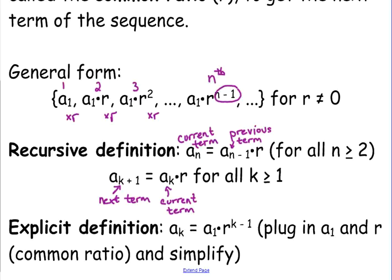Now, the explicit definition is what is more helpful to us. A sub K is equal to the first term times the common ratio to the K minus 1. And just like yesterday, we're going to plug in the first term. We're going to plug in the common ratio. And there's not usually as much simplifying that can be done with the explicit definition for geometric, but we'll look at that here in a second.